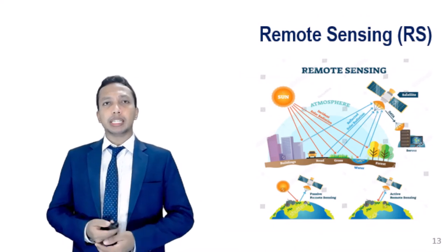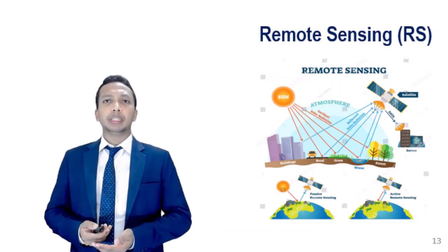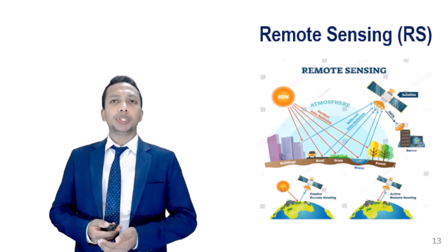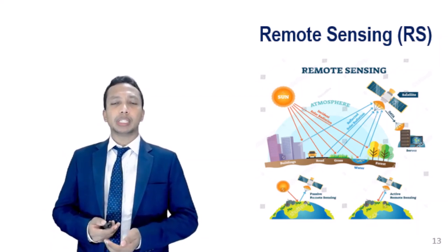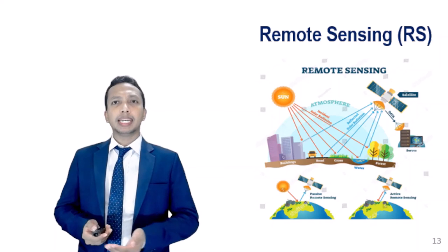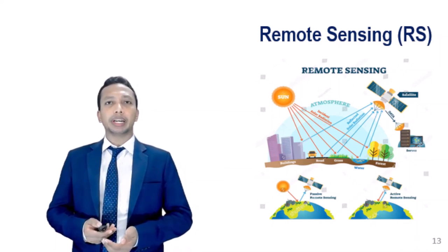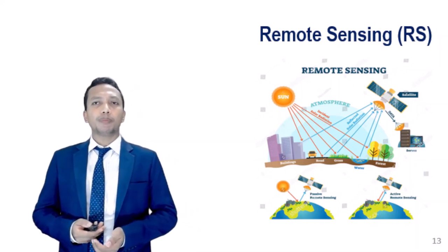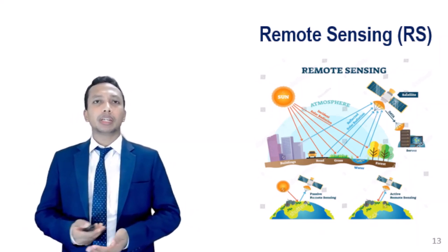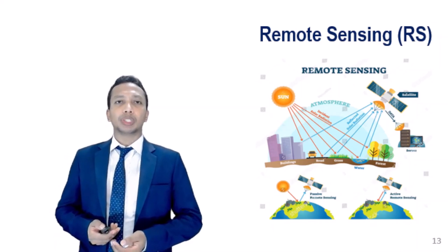Remote sensing. Remote sensing in the simplest terms means acquiring information about an object without touching the object itself. Remote sensing can be defined as the technique of recording an object by a device or sensor by measuring the portion of reflected or emitted electromagnetic radiation from the Earth's surface.